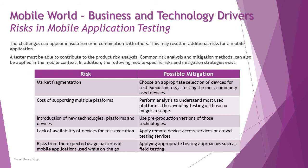Number five is the risk from expected usage patterns of mobile applications used while on the go — how people use different phones and what apps they use. Applying appropriate testing approaches such as field testing covers on-the-go scenarios where people are traveling and using your app with varying connectivity types. For example, you may start with 4G at home, then experience 3G, 2G, or no service at all. Field testing involves literally traveling with the device with the mobile app installed to cover these real-world conditions and reduce identified risk.